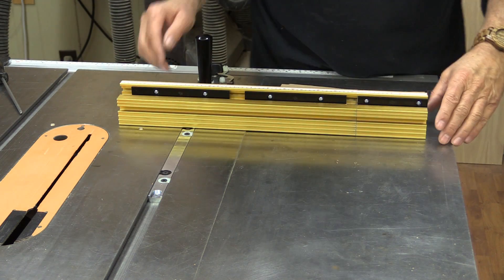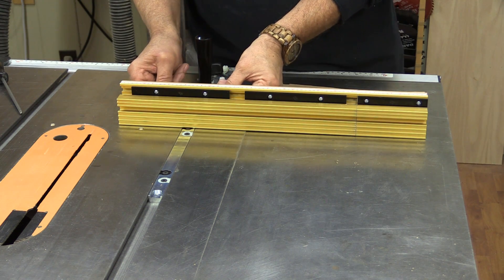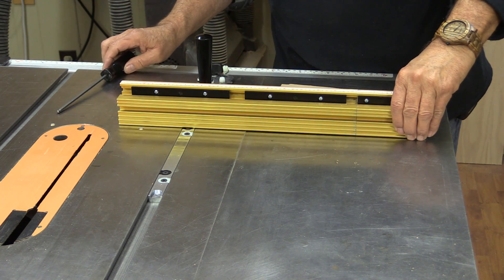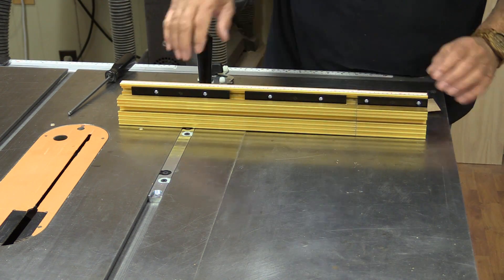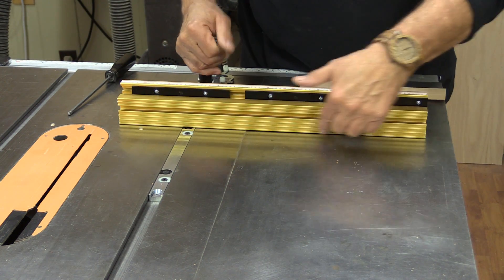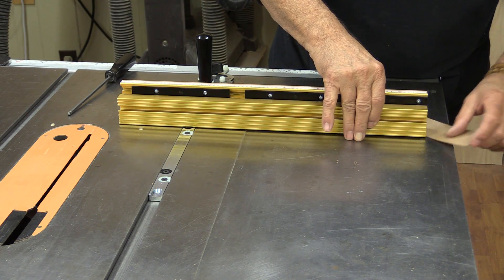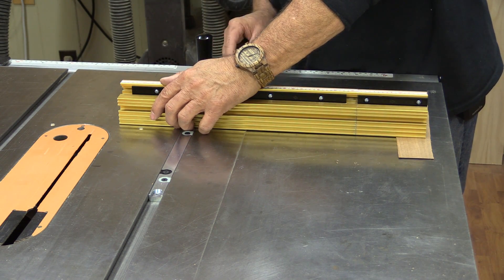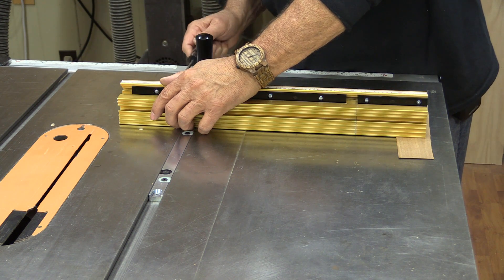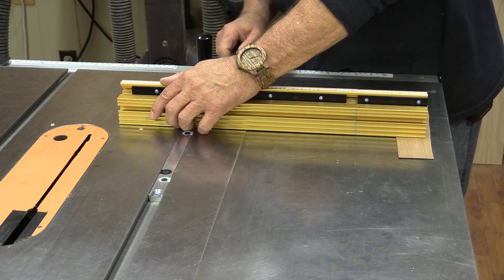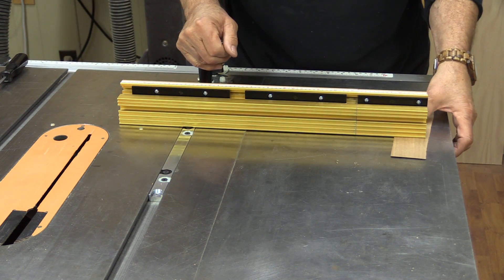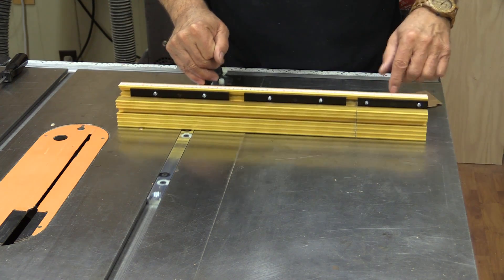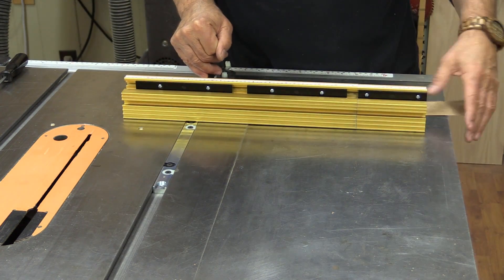Now before I start working on the top here, I'm going to loosen these off just ever so slightly. It doesn't say to do this in the manual but when I'm moving this back and forth it's scraping. I'm just going to put a little thin veneer under this side here, tighten it down, and that's better. It's just lifted it just enough so that I can't hear it scraping.